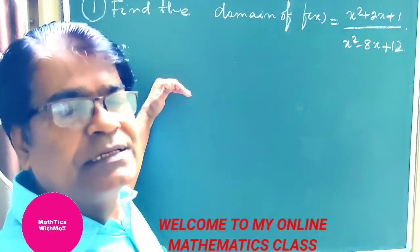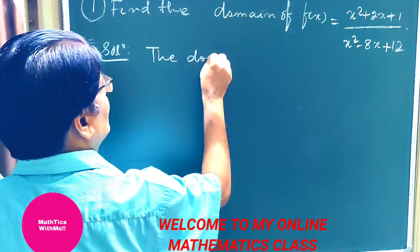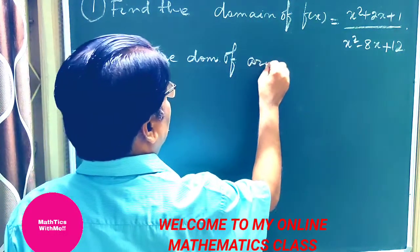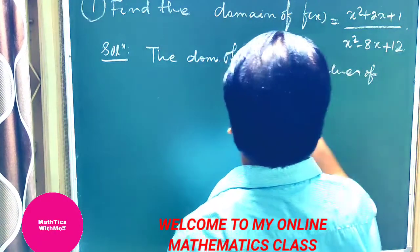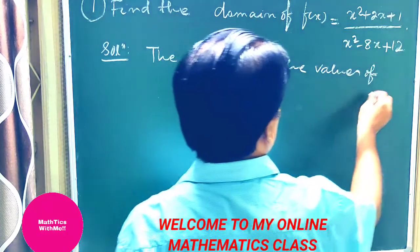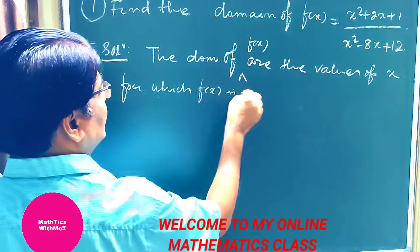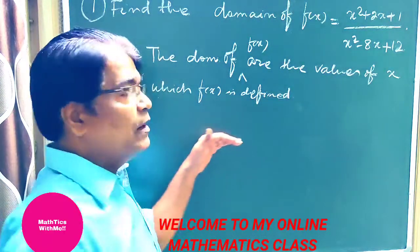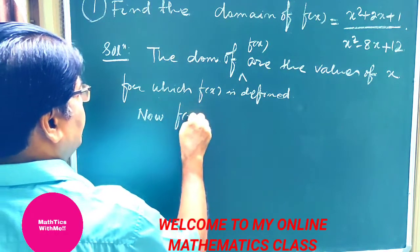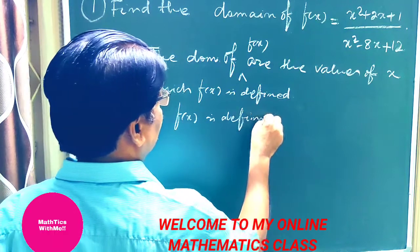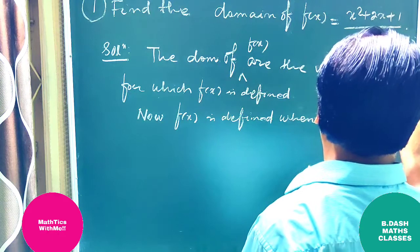The domain of f(x) are the values of x for which f(x) is defined. So we need to find the values of x for which f(x) is defined. Now, f(x) is defined when x² - 8x + 12 ≠ 0.